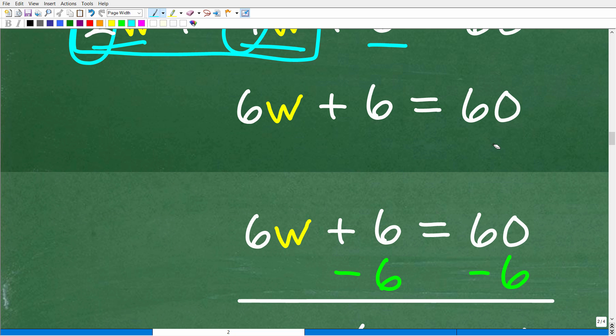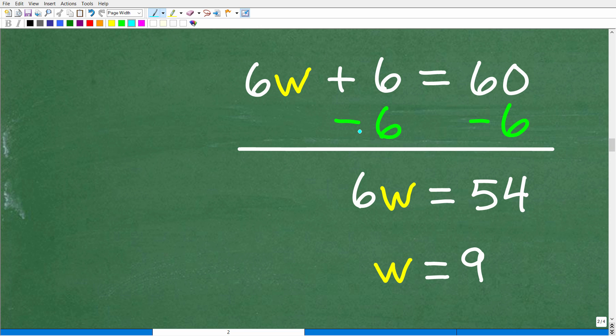Continuing on, what do we need to do? We need to get all our numbers on one side of the equation and all of our variables on the other side. We're going to subtract 6 from both sides of the equation. Remember the golden rule in algebra: whatever you do to one side of the equation, you must do it equally to the other side. So 6W plus nothing is 6W. Positive 6 minus 6 is 0 and 60 minus 6 is 54.